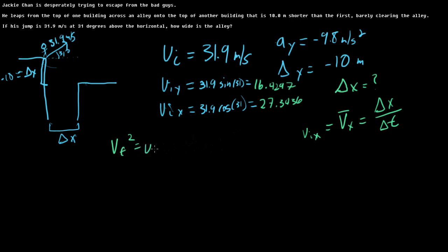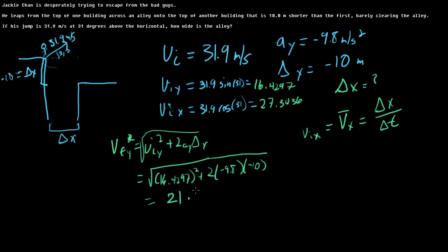Vf squared equals vi squared plus 2a delta y. And these are all y's. So let's take the square root of both sides, so I'll just go ahead and do that here. So plugging in, we get 16.4297 squared plus 2 times negative 9.8 times negative 10. So that equals, so I got 21.5855 meters per second for vf.